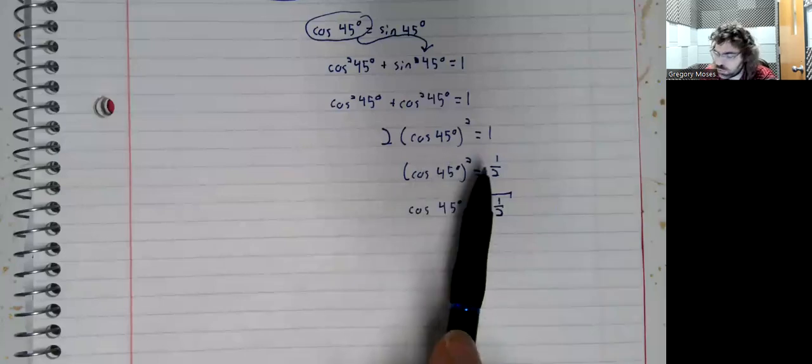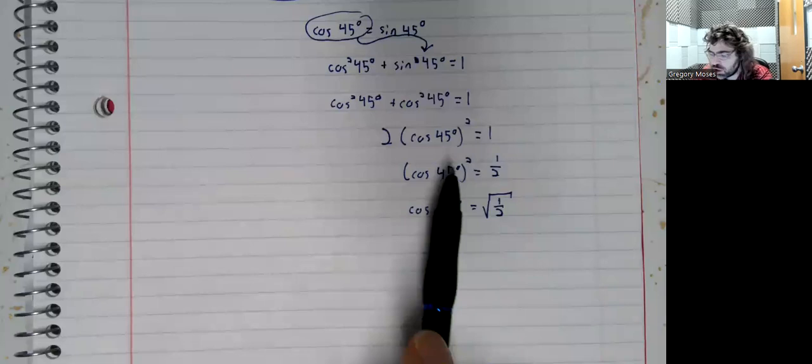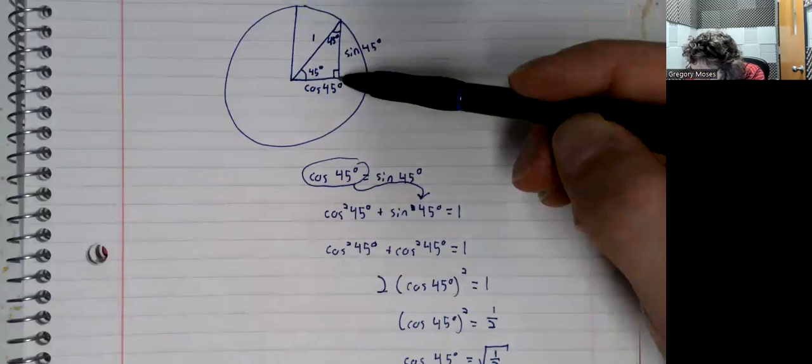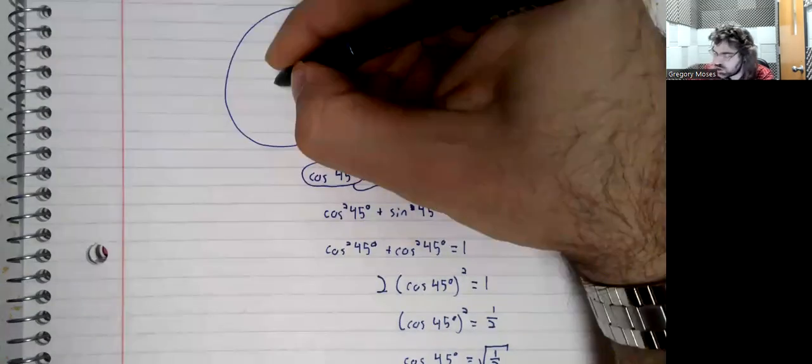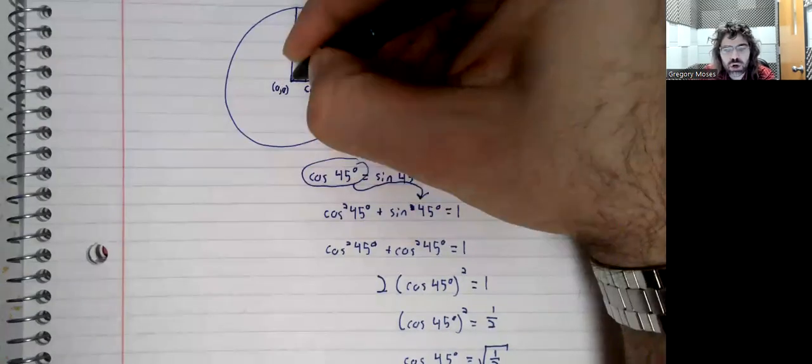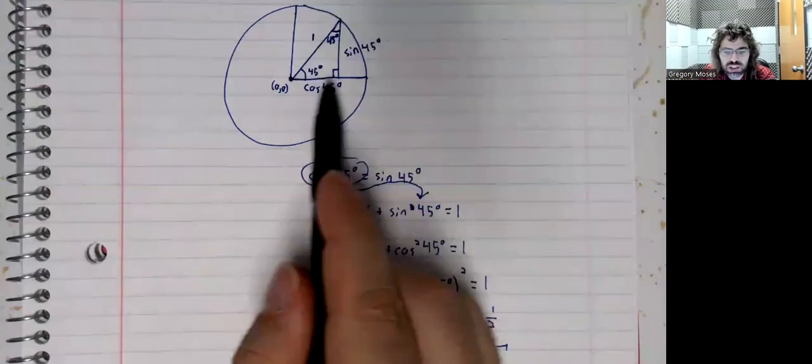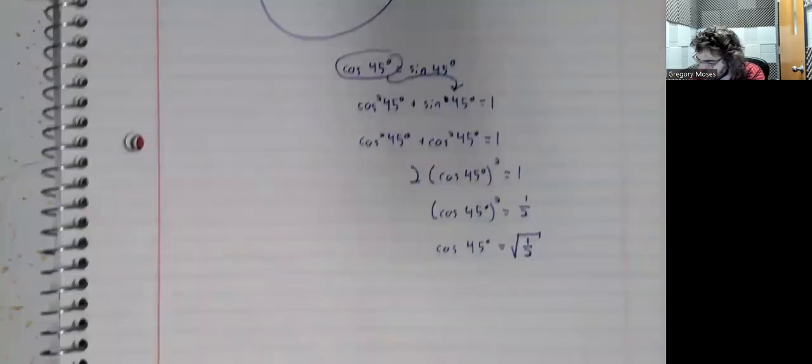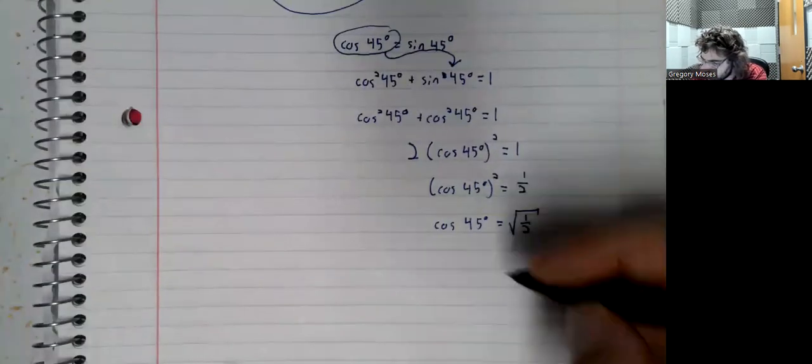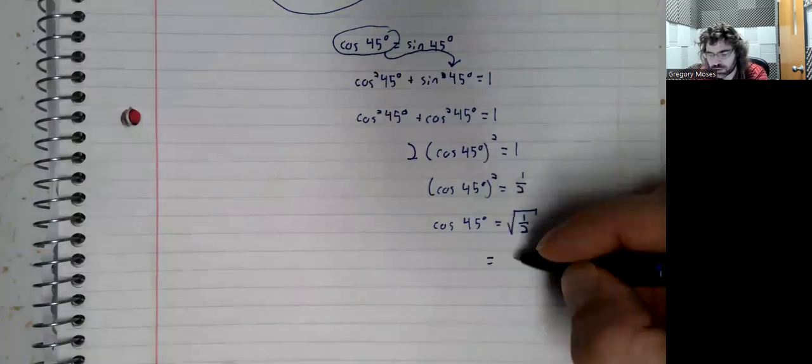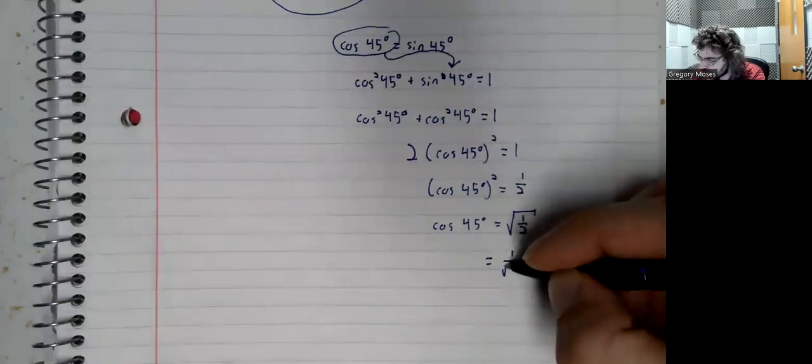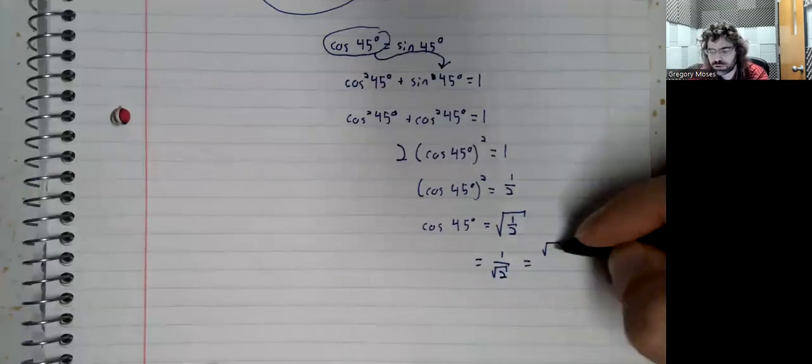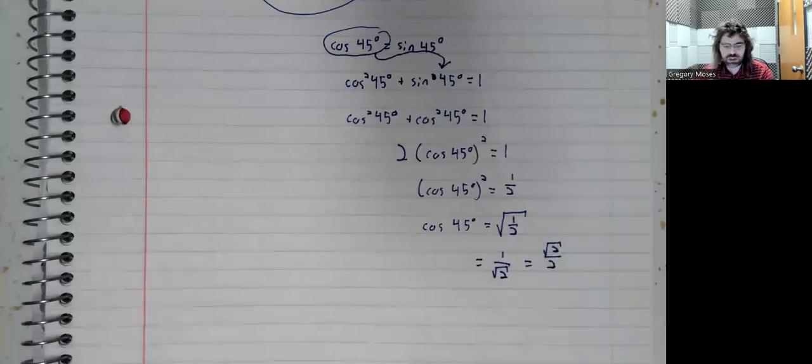But the cosine is this x-coordinate. This is, so here's 0, 0. This x-coordinate is positive. So the cosine is the positive square root. And this is 1 over the square root of 2. And traditionally, that's rewritten as the square root of 2 divided by 2.